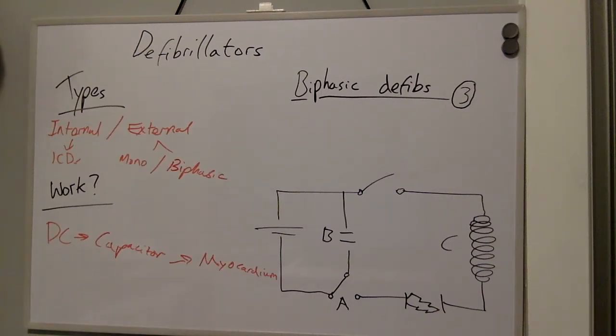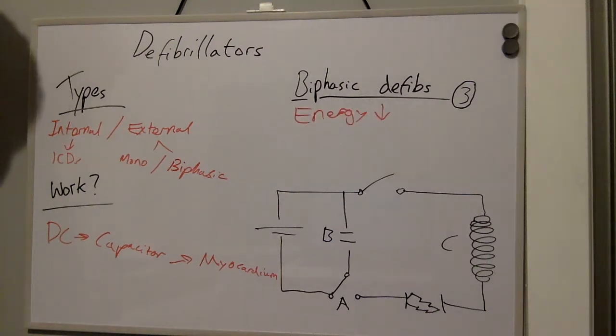Now to discuss the benefits of biphasic defibrillators. Biphasic defibrillators reverse the polarity of the shock midway through shock delivery. The advantages include: the energy required for cardioversion is lower, there is less myocardial stunning and depression following the shock, and they can be battery powered.